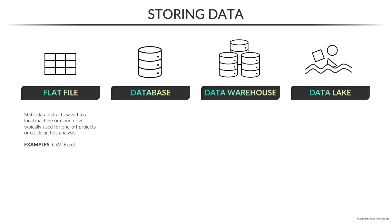The simplest method of data storage is a flat file, which is typically a static tabular data extract saved either to a local drive or cloud storage like Google Drive or OneDrive. This is very common for one-off projects or quick ad hoc analyses that don't require multiple data sources, ongoing maintenance, or complex data models. The most common types of flat files you'll see are CSVs and Excel workbooks.